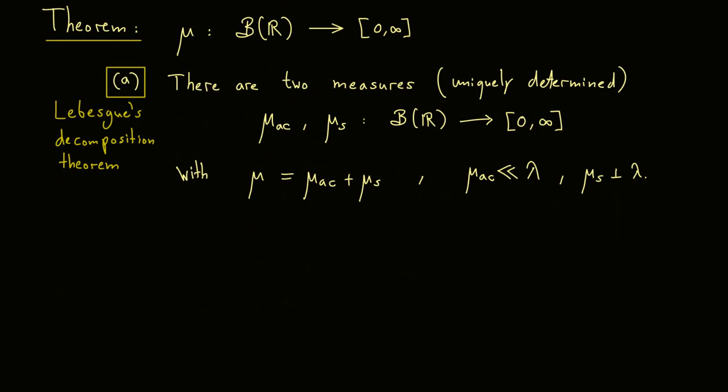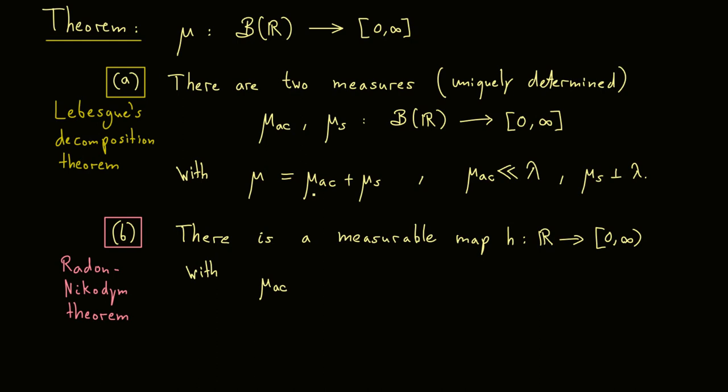And the second part of our theorem here will be now obviously the Radon Nikodym theorem. However it only makes sense with the first part because we relate with the part that is absolutely continuous. The theorem now states that there is a measurable map that we call H. As always the domain should be the set X but here we chose it as the real numbers. And we map into the non-negative numbers. And now the property is that we can rewrite the absolutely continuous part from A by using an integral for the Lebesgue measure lambda. Inside our integral we have our function H and there we have the Borel set A. And of course this should hold for all Borel sets A. And that's the Radon Nikodym theorem.